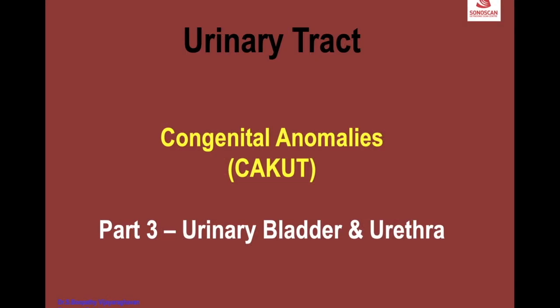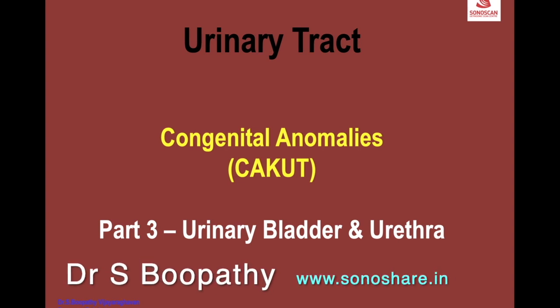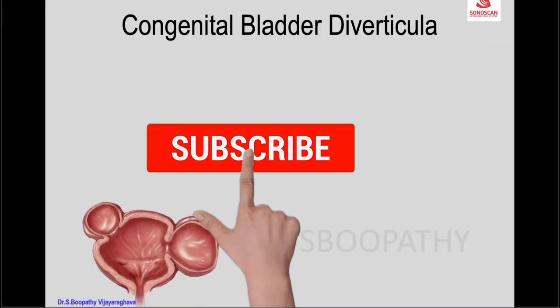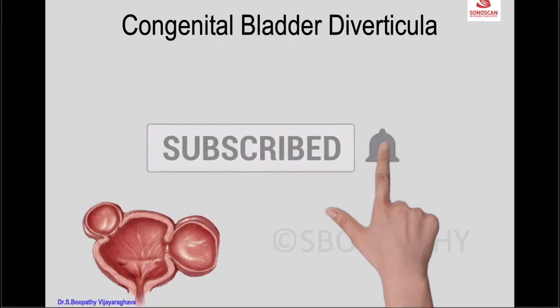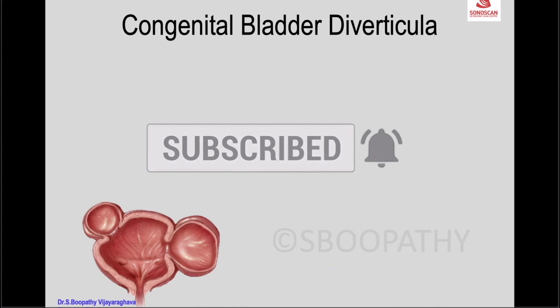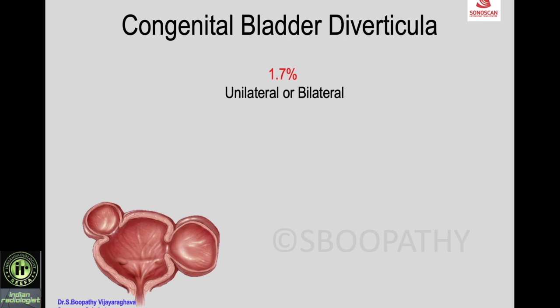Congenital anomalies of the urinary tract, part three: anomalies of the urinary bladder and urethra. One common condition is congenital bladder diverticula, with an incidence of 1.7 percent. It can be unilateral or bilateral.